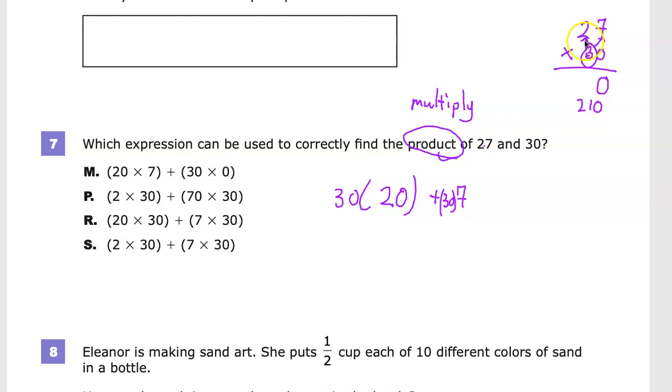And then I would do 30 times this 2, which 30 times 2, in this case this 2 is in the tens place, so it's 20. So 30 times 20, which is of course 600. And then I'd end up with 810, that sort of thing, just like this. 3 and 2 is 6, 7, 8, 810.